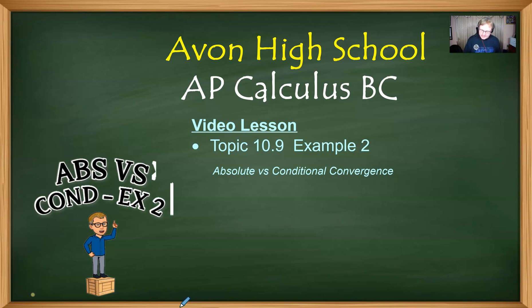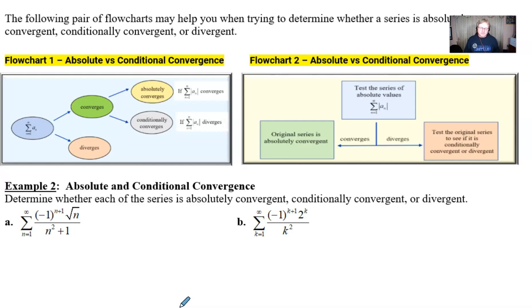Now as we ended the last video we introduced this very cool flowchart way in order to figure out convergence and divergence and absolute versus conditional convergence for these alternating series. So I want to walk you through these flowcharts and see what you think and then probably use one of them to solve the two problems that I have here in example two as part A and B.